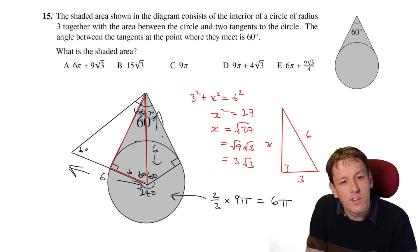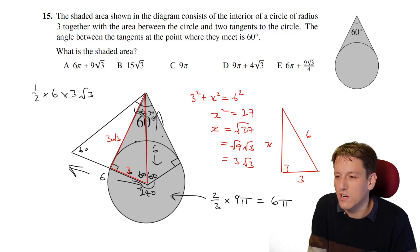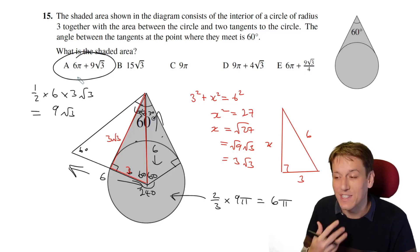So I've got that this height here then is 3 root 3. This base along here is 3, or the whole thing is 6, so the area of this triangle is a half times the base of 6 times the height of 3 root 3. That's doing the two triangles together. So that's 9 root 3. So to get the total area, I'm just going to add this 9 root 3 to 6 pi, and we get 6 pi plus 9 root 3, and the answer is A.